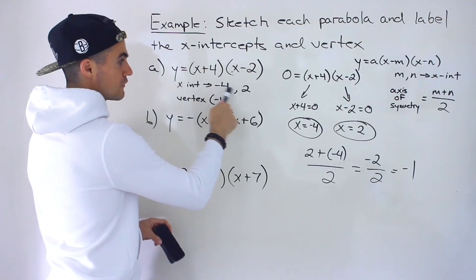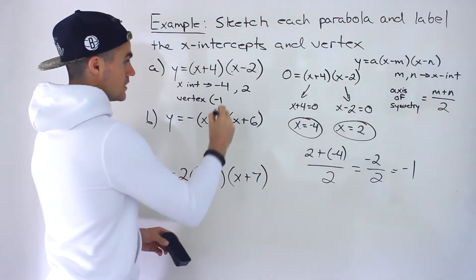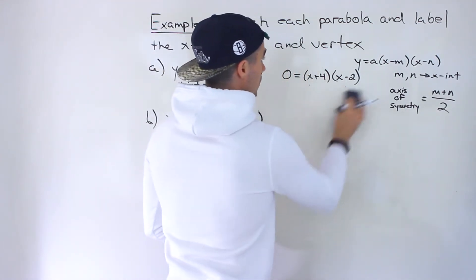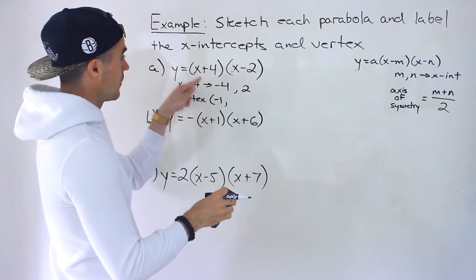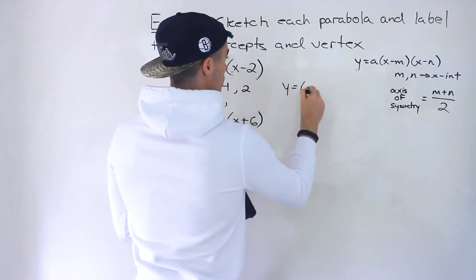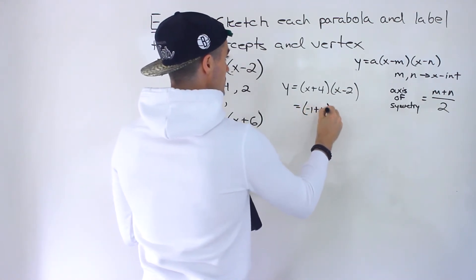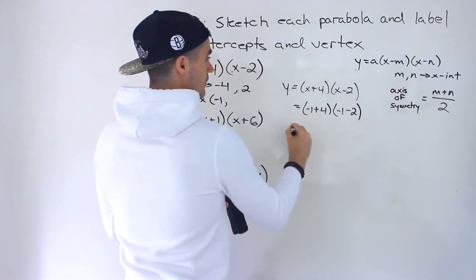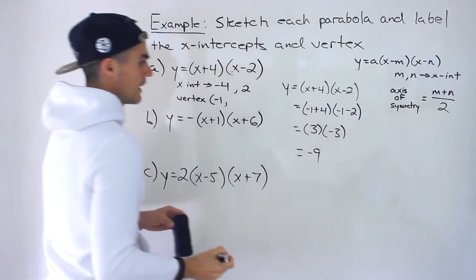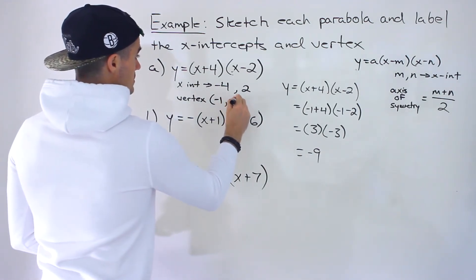Negative 1 is between negative 4 and 2 — from negative 4 to negative 1 is 3 units, and from negative 1 to 2 is also 3 units. So the x-value of the vertex is negative 1. To get the corresponding y-value, we plug in x equals negative 1 into the equation. Negative 1 plus 4 is 3, and negative 1 minus 2 is negative 3. 3 times negative 3 gives us negative 9. So the vertex is at negative 1, negative 9.